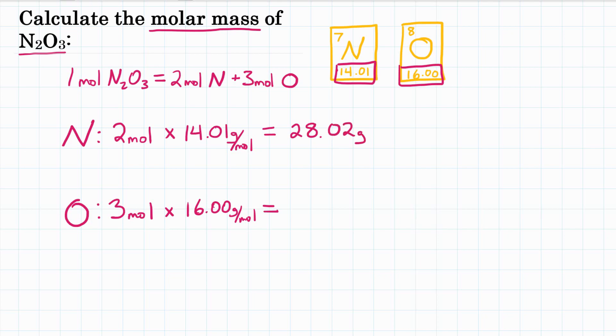So 2 times 14.01 is 28.02. Okay, that's grams. Technically, moles cancels out. And then for oxygen, 3 times 16 is 48.00 grams. Moles cancel out.